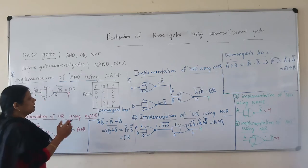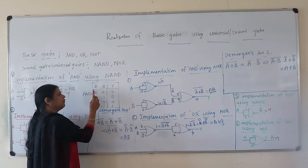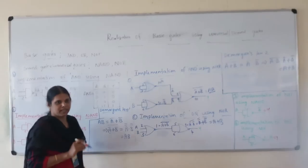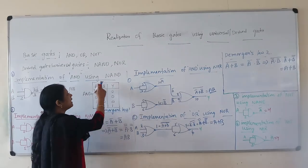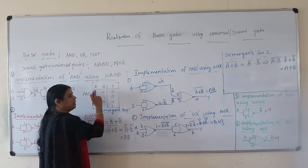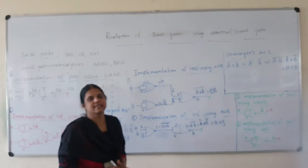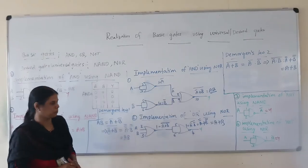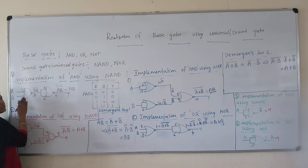As we know, the truth table of the AND gate with two inputs has four different combinations: 00, 01, 10, and 11. In the case of an AND gate, whenever both inputs are high, it produces a high output. In the rest of the cases, it produces zero or low as the output. Therefore, we will now discuss how to obtain an AND gate using NAND.